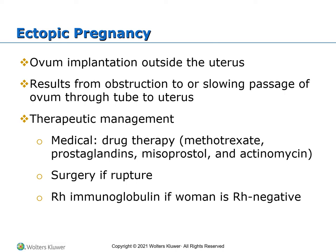Most ectopic pregnancies are diagnosed before rupture based on three classic symptoms that occur six to eight weeks after the last menstrual period. She will have abdominal pain — beginning as dull lower quadrant pain on one side, which can progress to colicky pain as the tube stretches, then progressing to diffuse, constant, severe pain generalized throughout the lower abdomen. Also delayed menses of one to two weeks, or lighter than usual or irregular periods. Also abnormal vaginal bleeding or spotting — mild to moderate, dark red or brown, intermittent — due to sloughing of the decidua of the uterus.